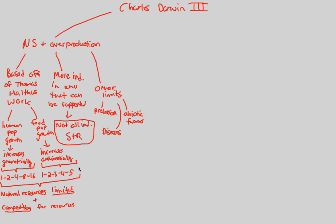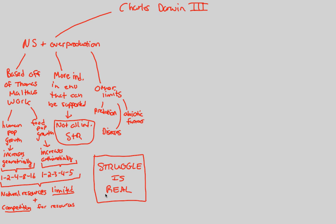What do we mean by natural selection and overproduction? The theme, based off of Thomas Malthus and what Darwin believed, is simply that the struggle of life is real indeed. There is a struggle because every individual has the capacity to reproduce, but they won't — because natural resources are limited, because there's competition, because they might get eaten, they might die, or they might get struck by lightning. Thus, not everybody will survive and reproduce.